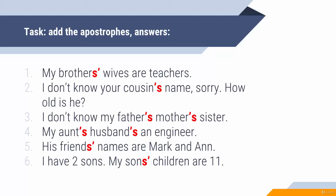'I don't know your cousin's name.' How old is he? This means that you have one cousin. When you want to express possession of a noun in singular, you add the apostrophe plus S after the word, so the apostrophe is before S in this sentence.